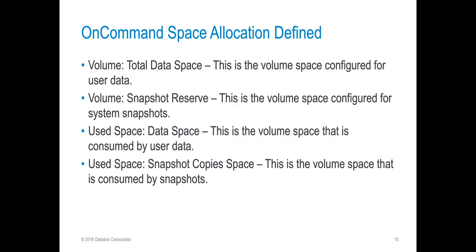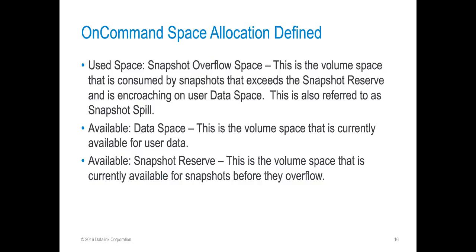We have three different boxes here: the volume, the available, and the used. Total data space is the volume space configured for user data. Snapshot reserve is the volume space configured for system snapshots. Data space is the volume space consumed by user data. Snapshot copy space is the volume space consumed by snapshots. Snapshot overflow space is the volume space consumed by snapshots that exceeds the snapshot reserve and is encroaching on the user data space — also referred to as snapshot spill. In the available section, data space is the volume space currently available for user data, and snapshot reserve is the volume space currently available for snapshots before they overflow.